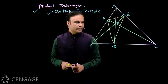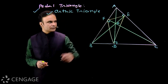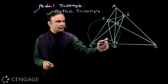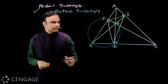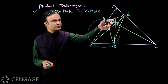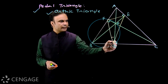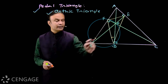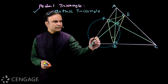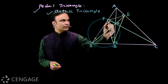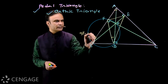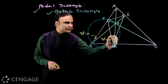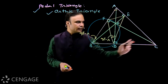Now, do you see sets of four concyclic points in this figure? Points B, F, H, D are concyclic. For the angle at D, chord FH subtends the same angle at point D and at point B, since B, F, H, D are concyclic. Considering right triangle AEB, this angle is 90°, angle A gives the other angle as 90° − A, so the subtended angle is also 90° − A.